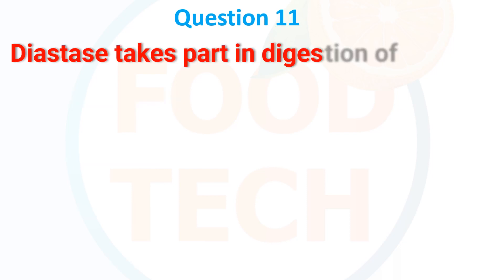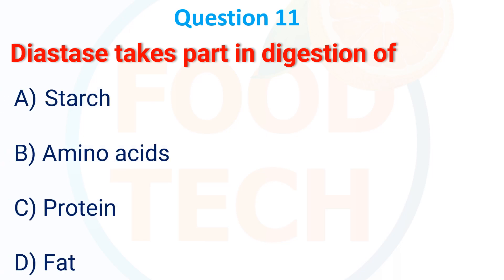Diastase takes part in digestion of: A. starch, B. amino acid, C. protein, D. fat. The answer is A, starch.